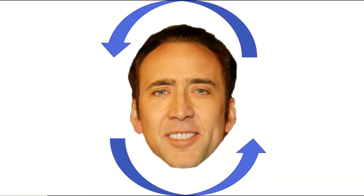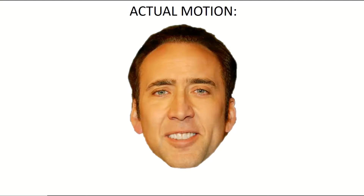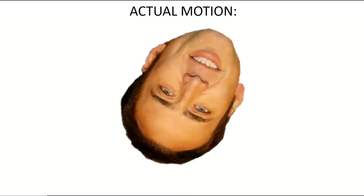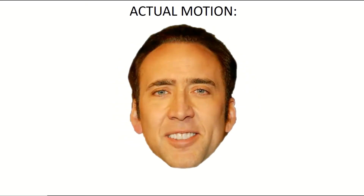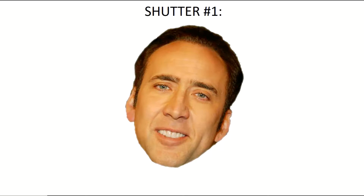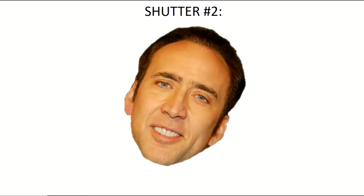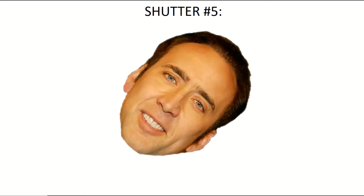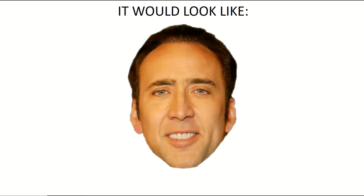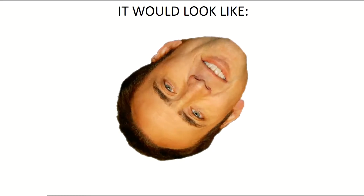Here's a visual representation. This man's face is actually spinning counterclockwise — the real motion is like this. Now let's say the shutter speed on your camera is a bit slow. The first frame captures his head here, the second here, the third here, the fourth here, and the fifth here. When you go back and replay that footage, what it actually looks like is his head spinning in the clockwise direction — the opposite of what's actually happening.